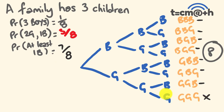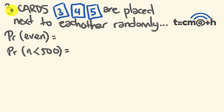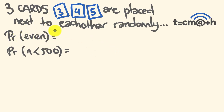For our last example: three cards labeled 3, 4, and 5 are placed next to each other randomly after being drawn out of a hat. We'll use a probability tree to illustrate all different results possible, and then work out the probability that the three-digit number made is even, or that the three-digit number made is less than 500.